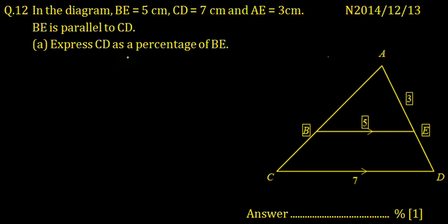Part (a): Express CD as a percentage of BE. So CD as a percentage of BE is CD upon BE multiplied by 100. CD is 7 and BE is 5.